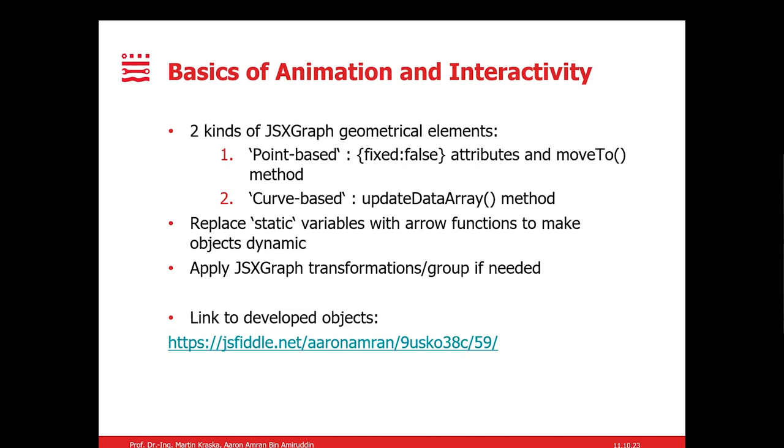Because the curve, from my understanding of a curve, it is from a function, so it's meant to be dynamic. The second thing I came to realize was that, as previously stated by Professor Kraska, the objects in MecLib are mostly static. The workaround that I found for this was to replace the static variables using arrow functions. For those who do not know what arrow functions are, arrow functions are simply a shorthand method of the normal function in JavaScript. And lastly, it is to apply the available JSXGraph transformations or regroup the objects if we need them.